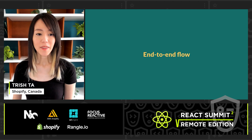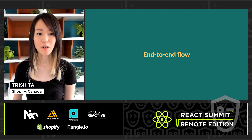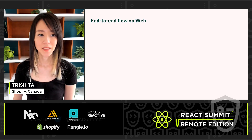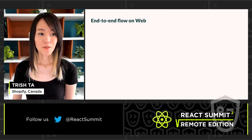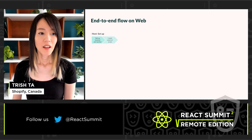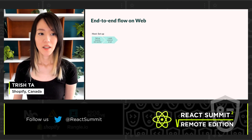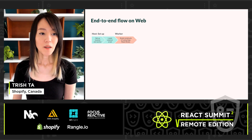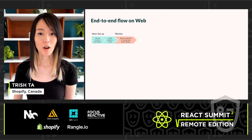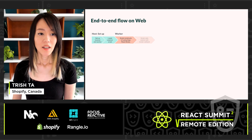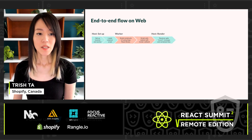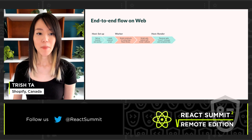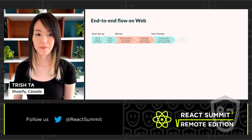Now I'll talk about the end-to-end flow of how the content is rendered. On web, first the host does some setup steps to set up the worker. Then we load the external script, and then the external script constructs UI using our libraries. Then it calls to render. This results in the host receiving a message with the serialized component tree, which is finally rendered as UI.